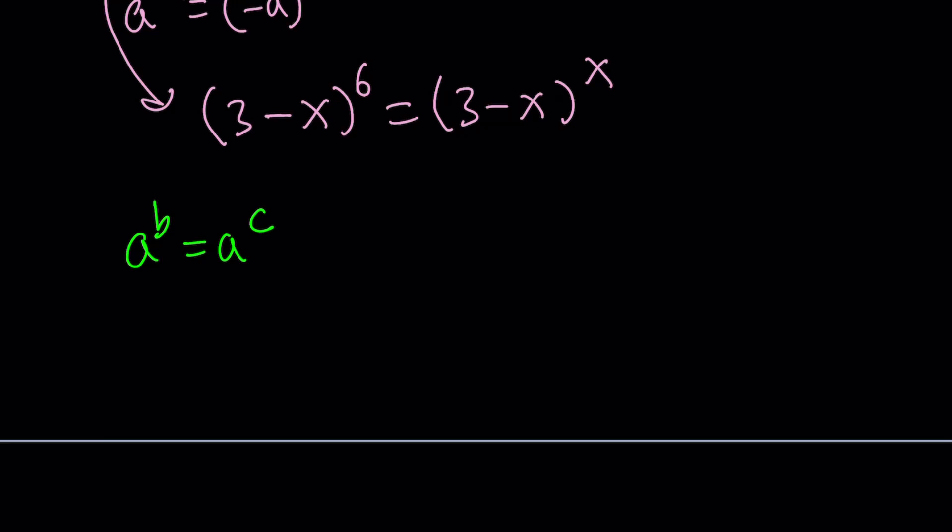First of all, obviously, we can safely say that the base can be 0, right? If a is 0, this is always going to be true no matter what b and c are, except b and c cannot be 0. That's the only limitation we have because 0 to the power 0 is an indeterminate form.